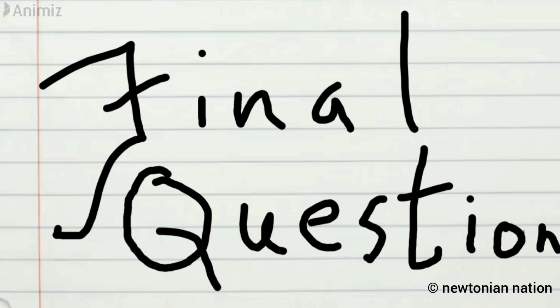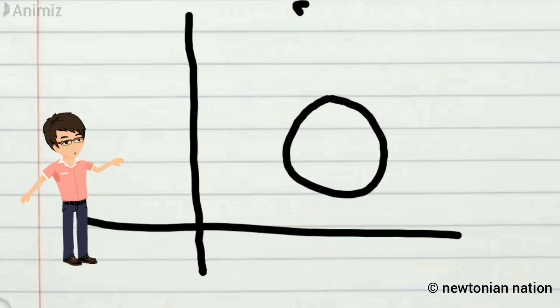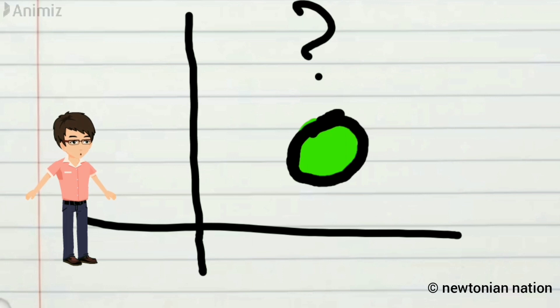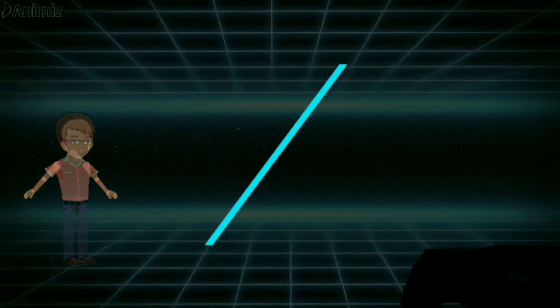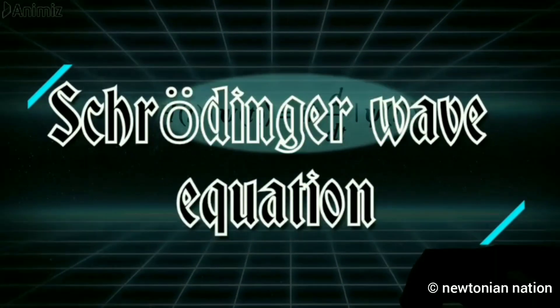Okay, the final question. I have not yet find the exact position of an electron or a particle. Then how can we find that position of a particle? The answer can be only given by Schrödinger's wave equation.